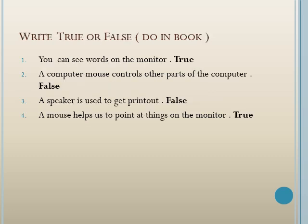True or false — you have to do this in your book. You can see words on the monitor: true. A computer mouse controls other parts of the computer: false. A speaker is used to get a printout: false. A mouse helps to point at things on the monitor: true. A mouse is also called a pointing device: true.